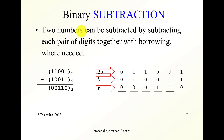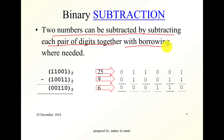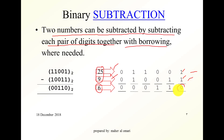Now let's look at binary subtraction. Two numbers can be subtracted by subtracting each pair of digits together with borrowing. This number is decimal 25, and this number is decimal 9. Twenty-five minus nine is supposed to give us a decimal result of 6. Starting: one minus one is zero — no borrowing needed.